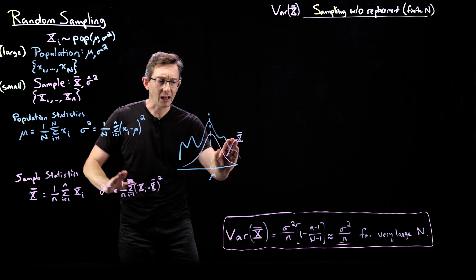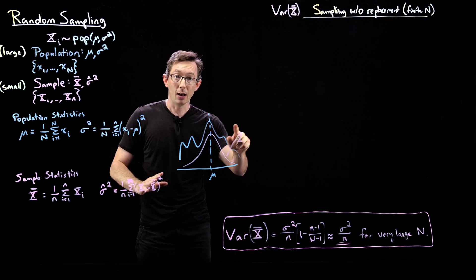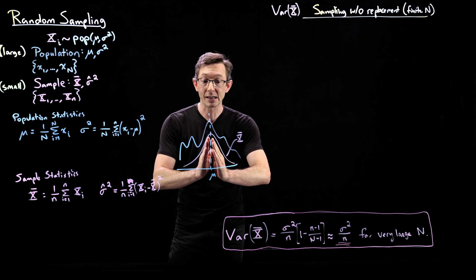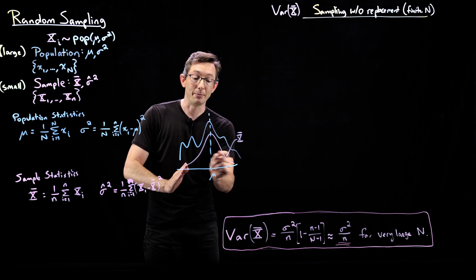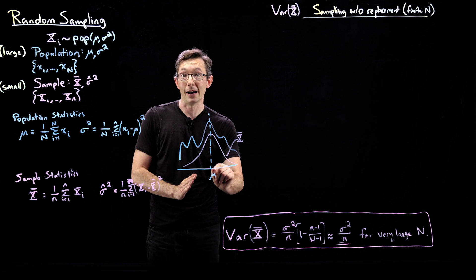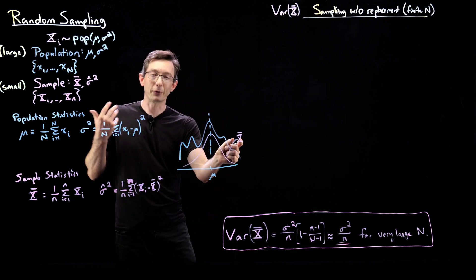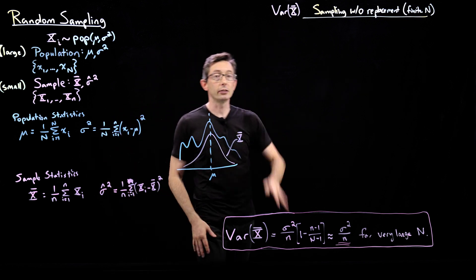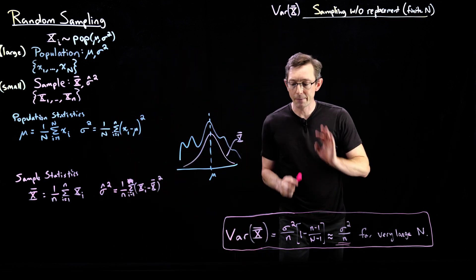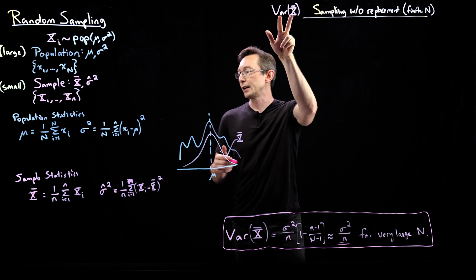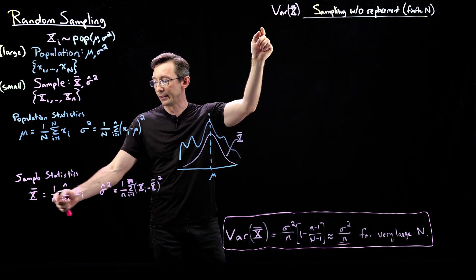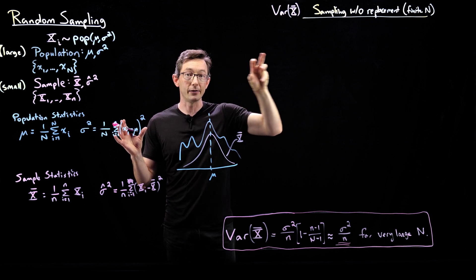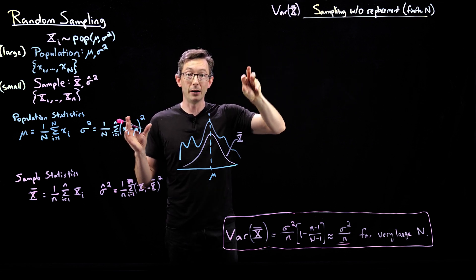Remember, if the expected value of the sample mean X̄ is μ, I want its variance to be as small as possible, because that means there's not much spread in X̄ around that expected value of μ. I want my sample mean to be a good estimate of my population mean. The big issue last time was when we wrote down the variance of X̄, we plugged in this sum and made the assumption that the variance of a sum is the sum of the variances.